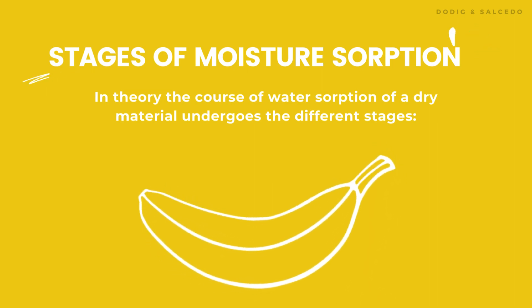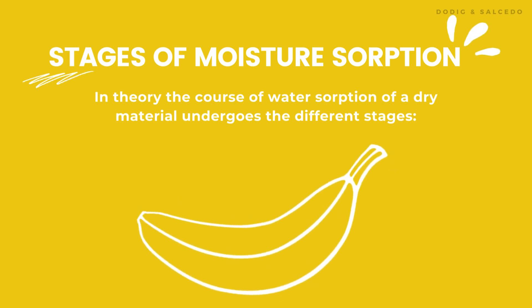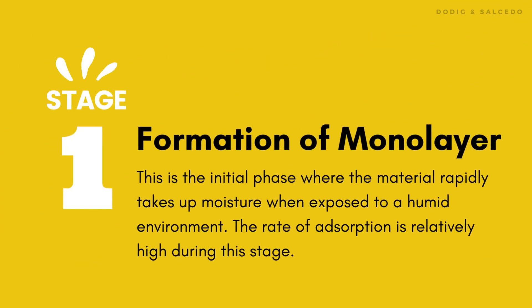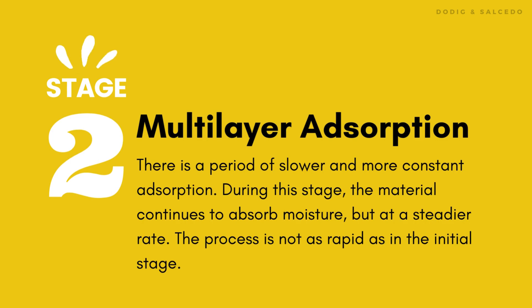The moisture sorption behavior of a food undergoes different stages, and in theory, the course of water sorption of a dry material undergoes the following stages. Stage 1 is the formation of a monolayer. This is the initial phase where the material rapidly takes up moisture when exposed to a humid environment, and the rate of adsorption is relatively high during this stage. Stage 2 is the stage of multilayer adsorption. Following the initial phase, there is a period of slower and more constant absorption, where the material continues to absorb moisture but at a steadier rate.